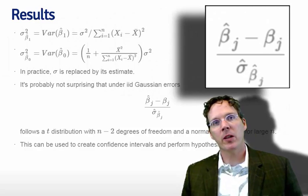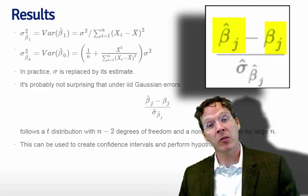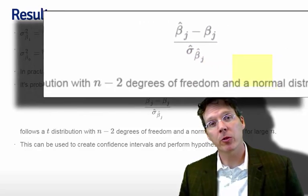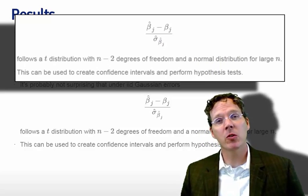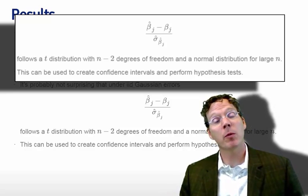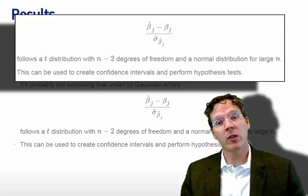It's probably not surprising that our slope or intercept estimate minus the true value divided by their standard error follows a t-distribution, and it has n minus 2 degrees of freedom. And so this can be used to create confidence intervals and hypothesis tests. And we'll go through some examples here in a couple of slides, but first I'm just going to show you that all of these results exactly hold, and it's what R is reporting.